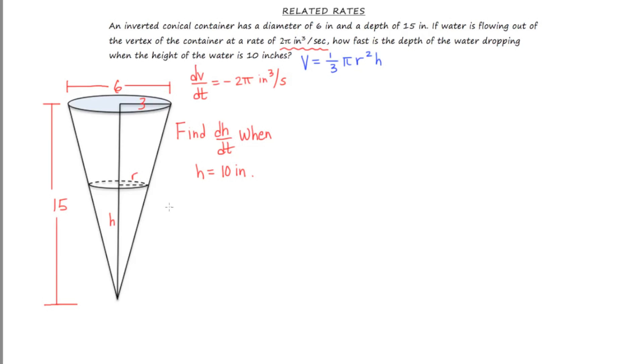Now 3/15 reduces to 1/5, and then if I cross multiply this I get h equals 5r.